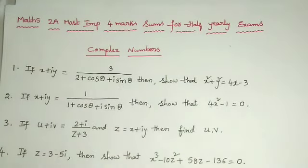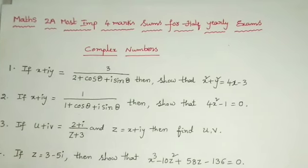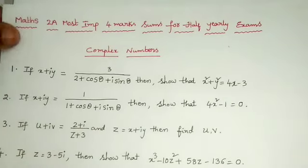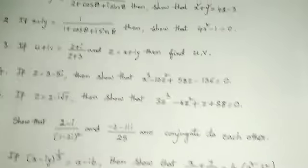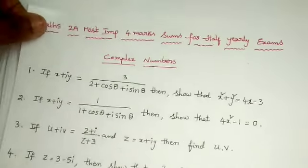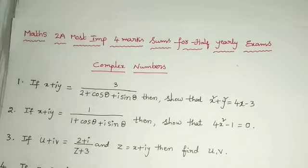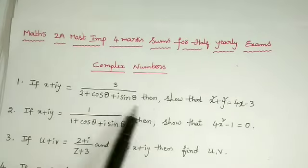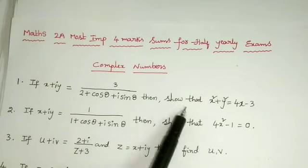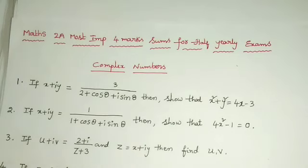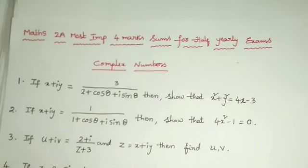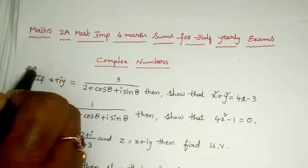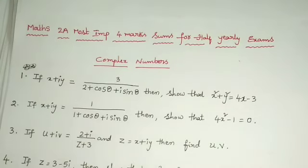First topic is complex numbers. These are all the 4 marks questions from the topic complex numbers. The first one: if x plus iy is equal to 3 by 2 plus cos theta plus i sine theta, then show that x squared plus y squared is equal to 4x minus 3. This is the most important 4 marks question, very very important sum.